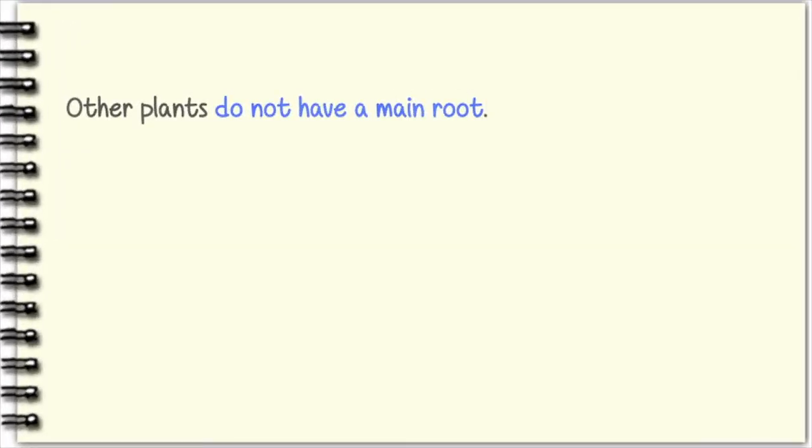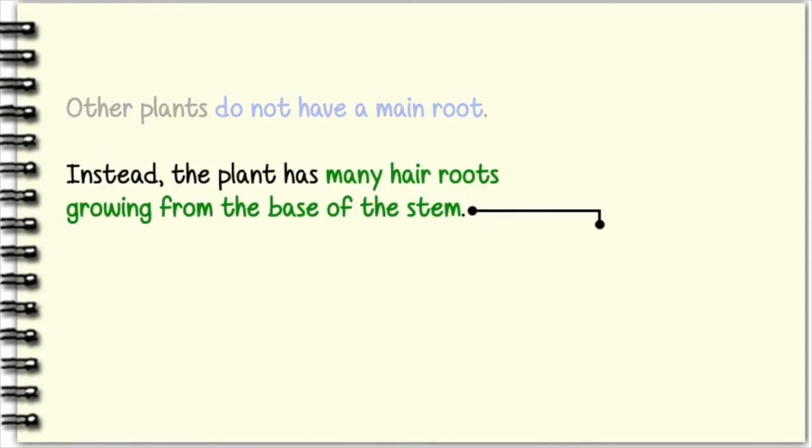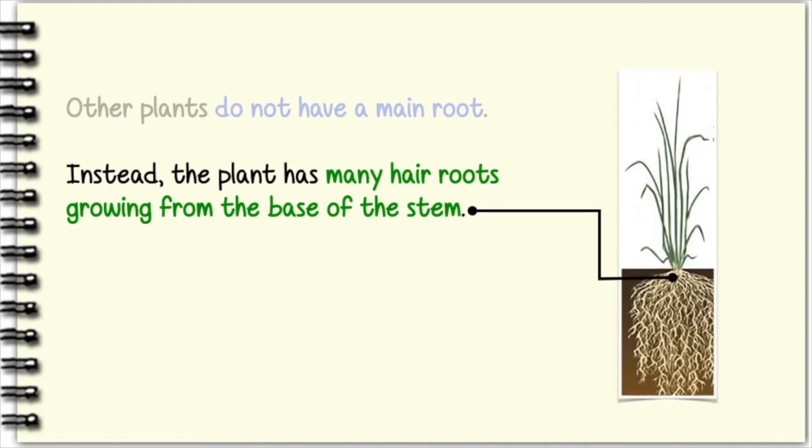Other plants do not have a main root. Instead, the plant has many hair roots growing from the base of the stem. This is called a fibrous root system.